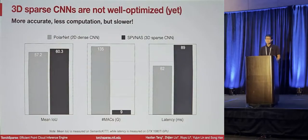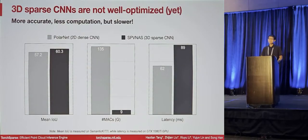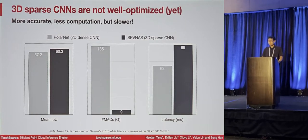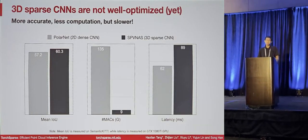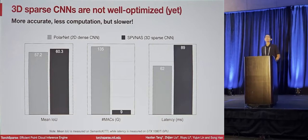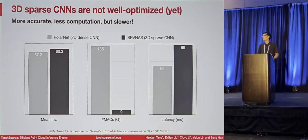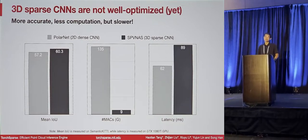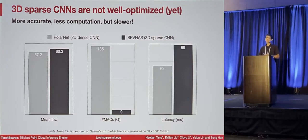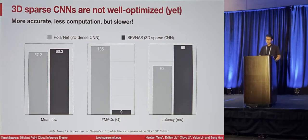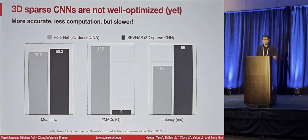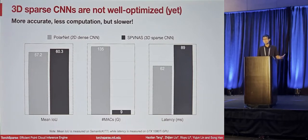Nowadays, people are tending to use 3D sparse CNNs to process point cloud data. Despite the fact that 3D sparse CNNs are really strong in terms of performance — with 3% higher accuracy at merely one-tenth of the computation overhead compared with the 2D solution — we can notice that they are actually measured to be 1.4 times slower on conventional GPU devices.